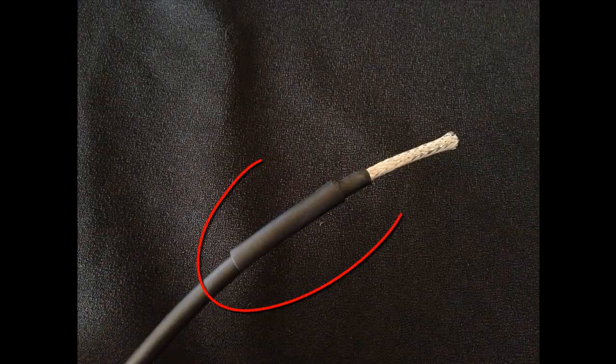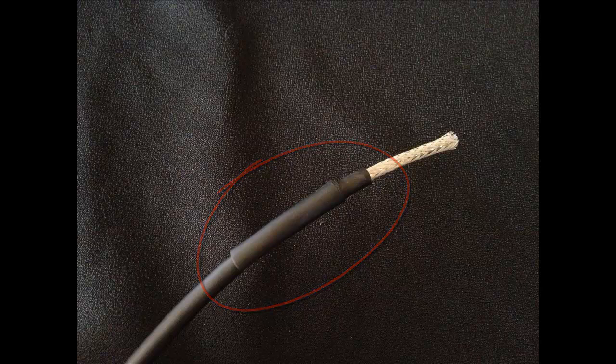Now install the shrink wrap around the cable. It is very important that you put the shrink wrap on now as you will not be able to add it later in the process.